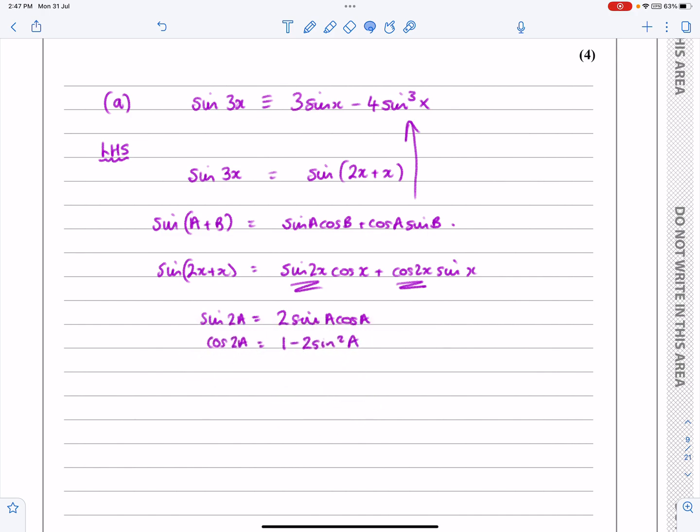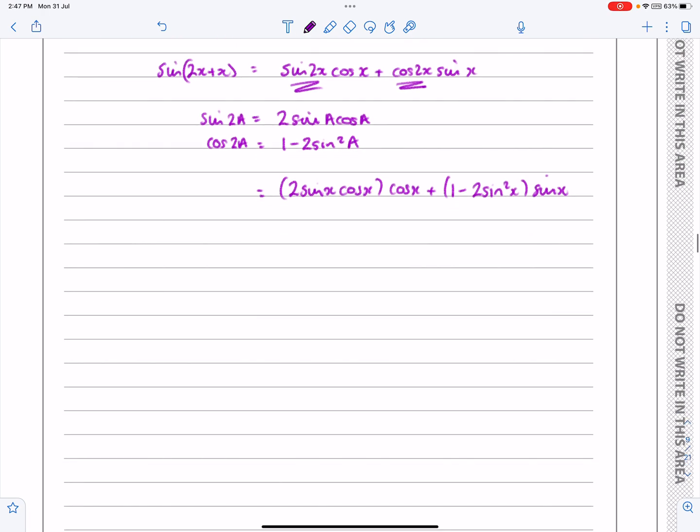If I use those, then I now get sine 2x is 2 sine x cos x multiplied by my cos x, plus the cos 2x is 1 minus 2 sine squared x multiplied by sine. So if we tidy this up, the first term is now 2 sine x cos squared x, and 1 minus 2 sine squared x times sine x is going to give me sine x minus 2 sine cubed x. So that's looking highly promising.